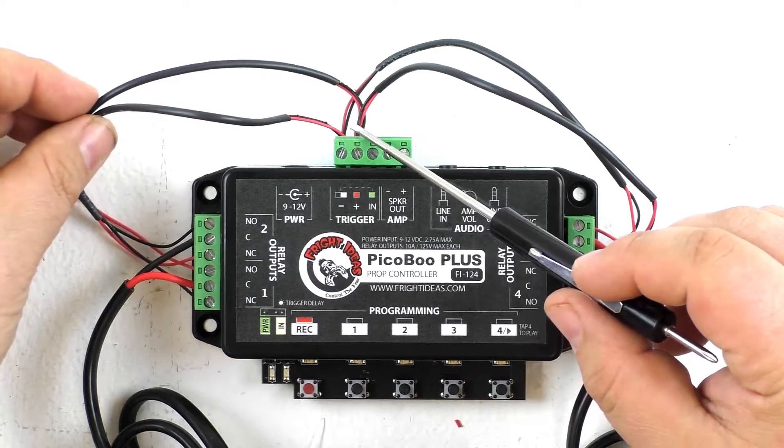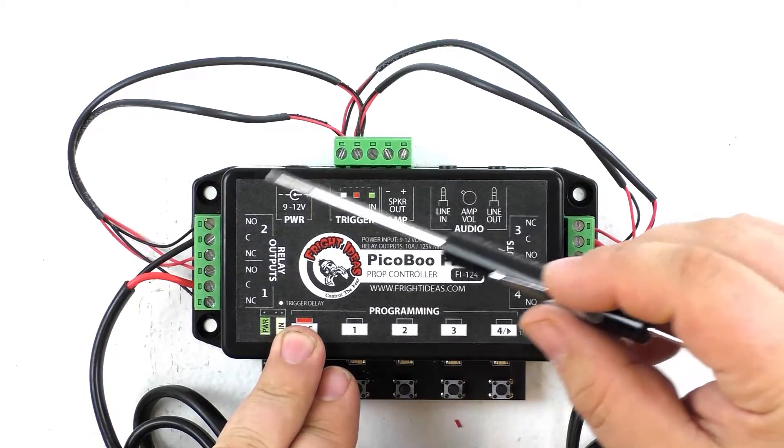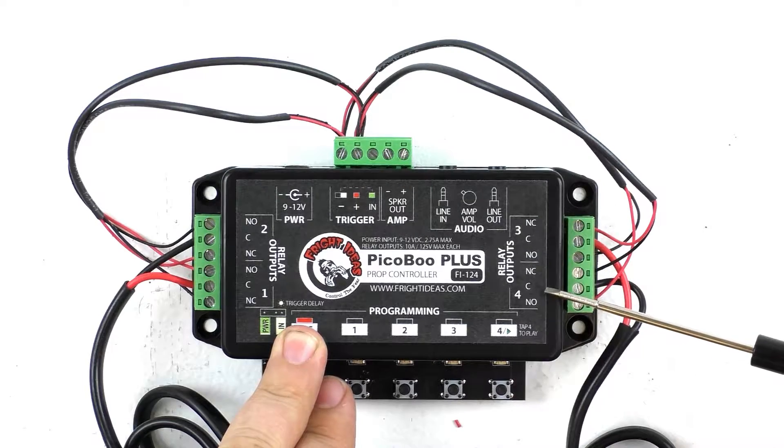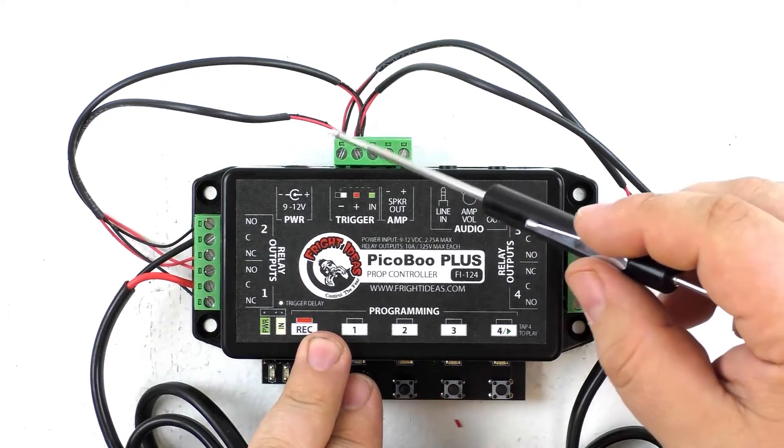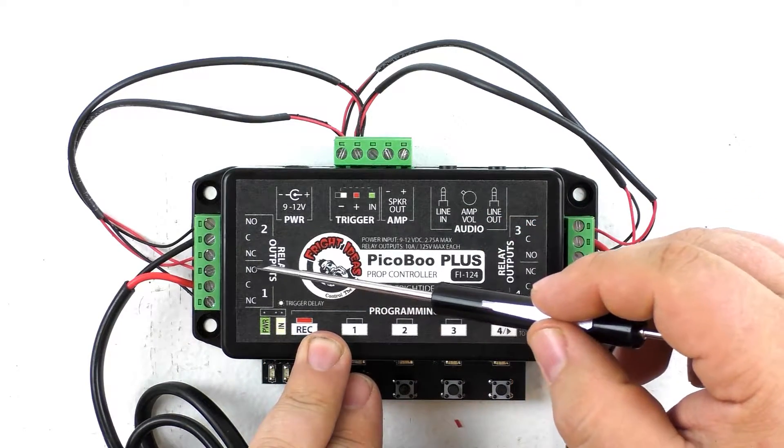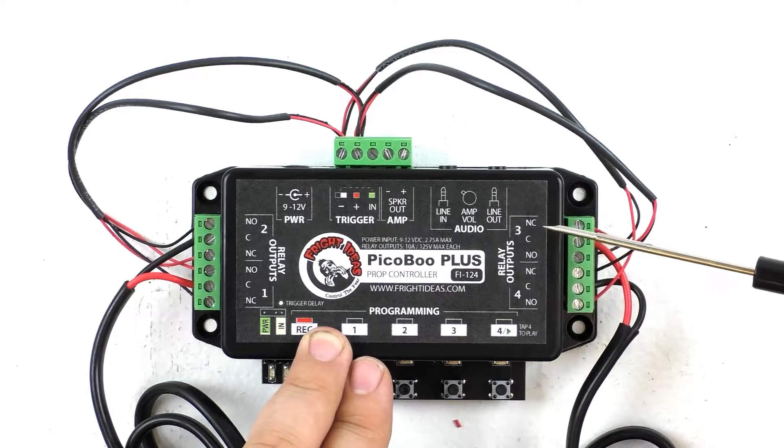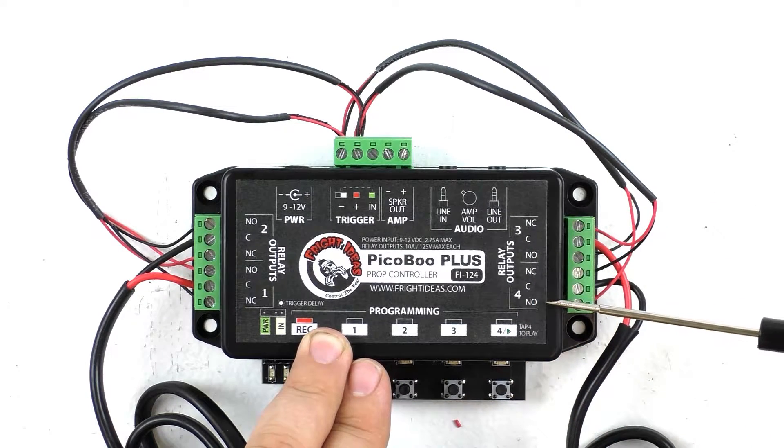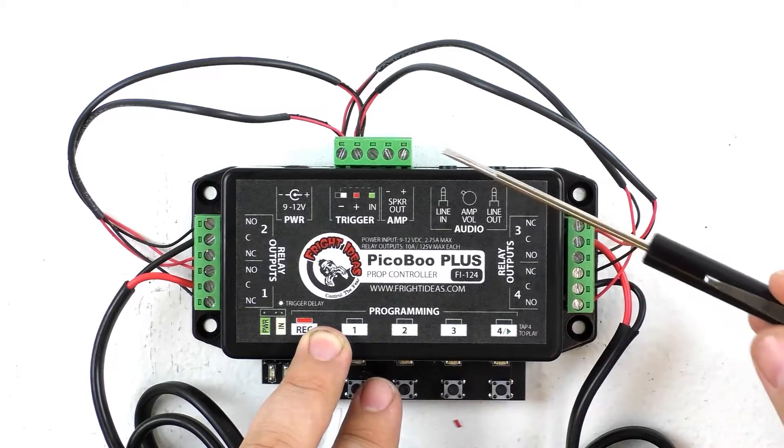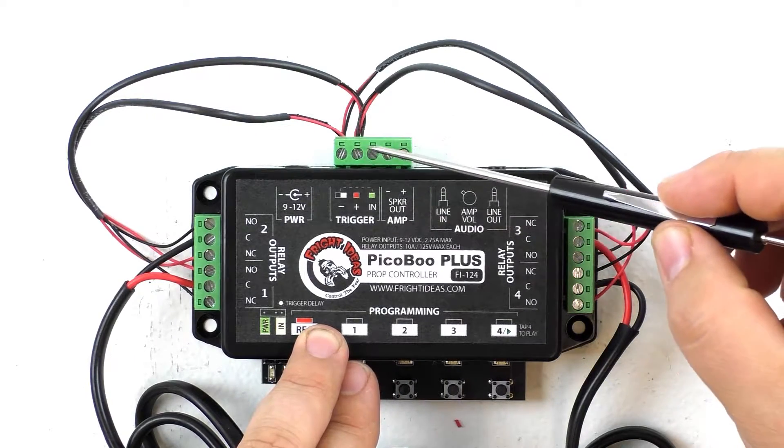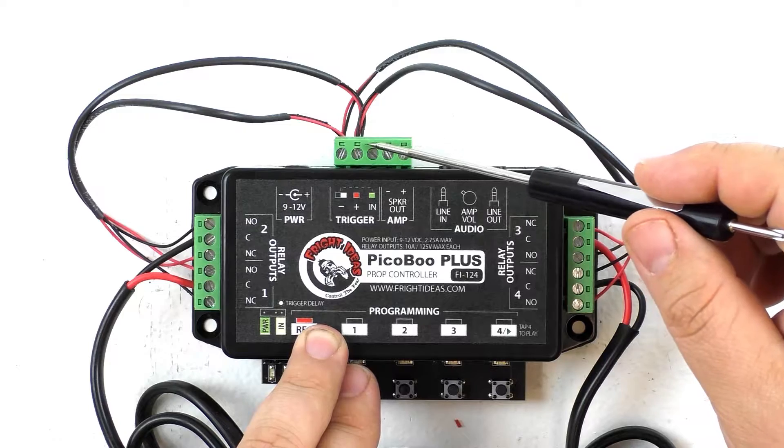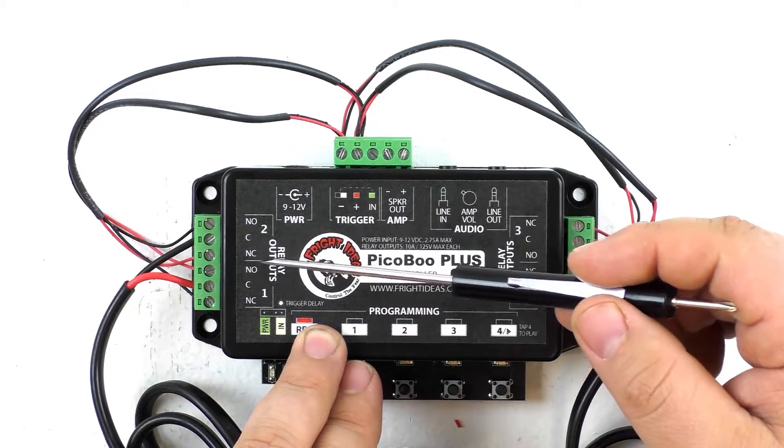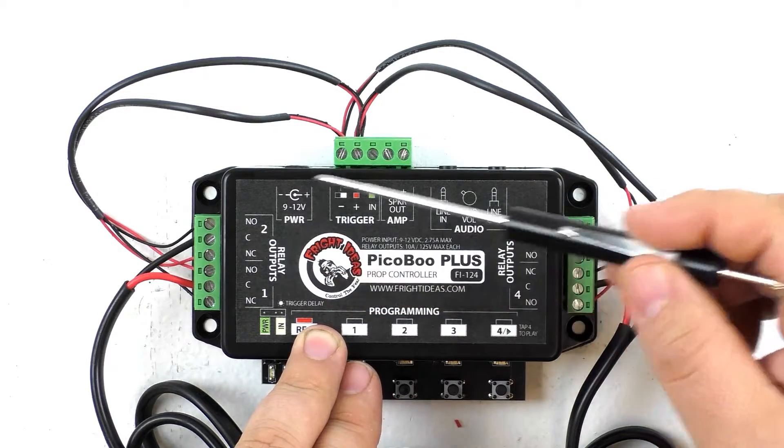The four wires from the negative are going to each of the NO terminals of the four different relay outputs of the Peekaboo. So we have a negative wire going to NO for 1, NO for 2, NO for 3, and NO for 4. I've then taken the positive trigger input here and attached those via wires to the NC terminal of the relay outputs 1 through 4.